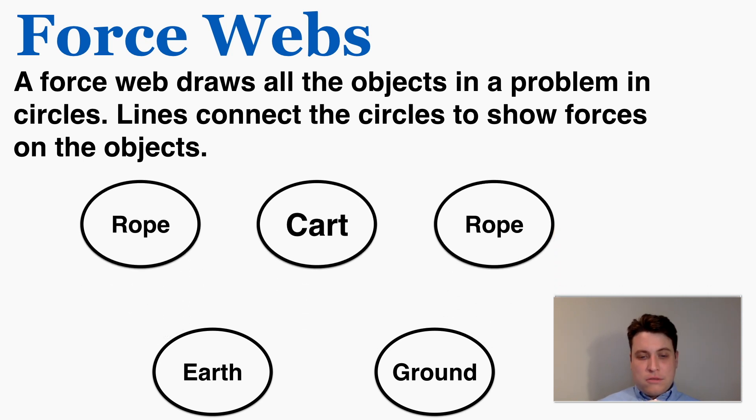Some students get a little confused and they're curious about why both the earth and the ground are in the same force web. It seems like they're the same thing. And the ground is what I'm calling the immediate surface that the cart is on that's putting a normal force on the cart, whereas the earth is putting the force of gravity on the cart. The earth is the entire earth, literally everything that is on the earth is putting the force of gravity on the cart.